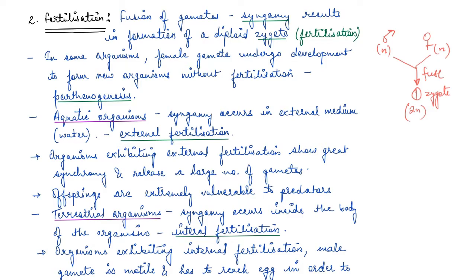Now in some organisms, remember that the female gametes undergo development to form new organisms without fertilization. In some cases, there is no fertilization and the female gamete itself undergoes development to form new organisms. This process wherein reproduction occurs without fertilization is known as parthenogenesis.